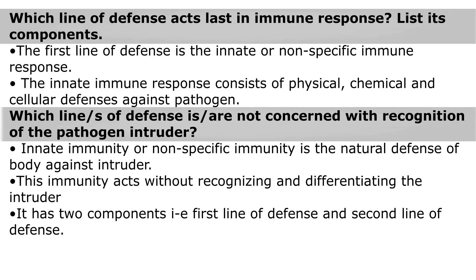Which line of defense acts last in immune response? List its components. The first line of defense is the innate or nonspecific immune response. The innate immune response consists of physical, chemical, and cellular defenses against pathogens.